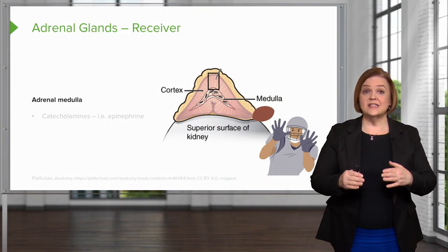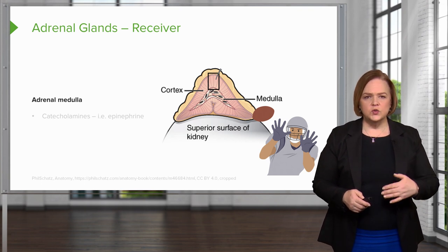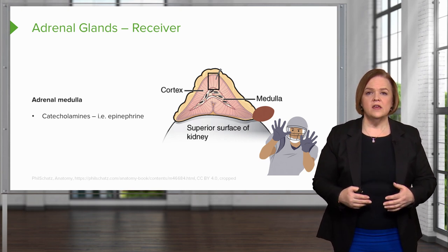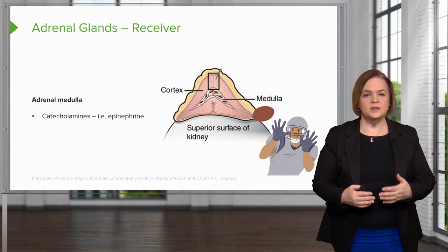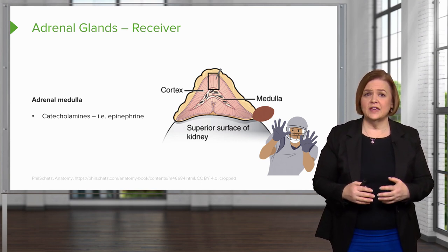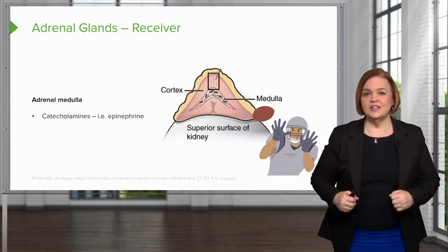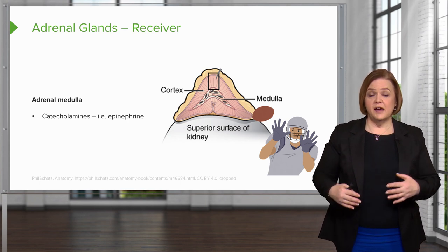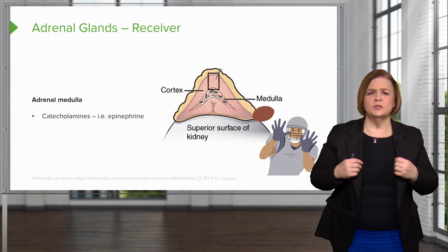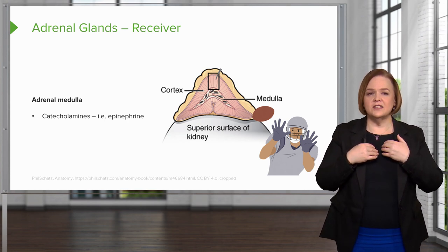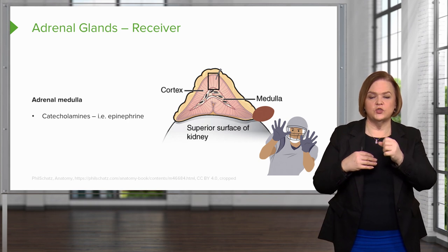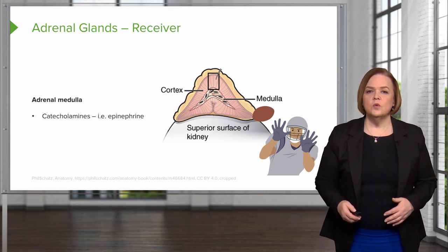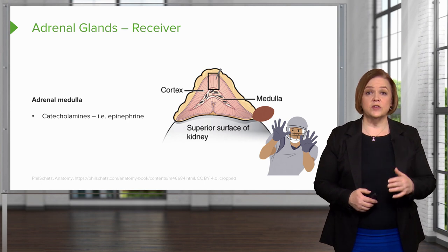The adrenal medulla — in the middle — puts out catecholamines like epinephrine. That's more of a sympathetic nervous system stimulator. When your body recognizes it needs to respond urgently, it releases catecholamines like epinephrine, which travel through the body, bind in the lungs causing bronchodilation, and bind on the heart's beta-one receptors making the heart beat faster and stronger. But when we're talking about corticosteroids, we're talking about the ones that come out of the adrenal cortex, not the medulla.